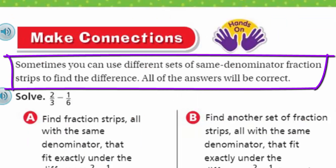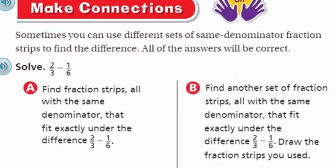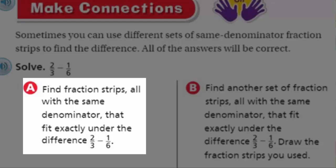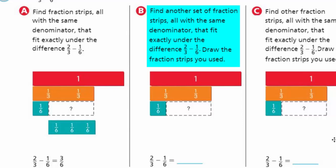Sometimes you can use different sets of same denominator fraction strips to find the difference. All of the answers will be correct. Solve, it says two-thirds minus one-sixth. Let's look at A. Find fraction strips all with the same denominator that fit exactly under the difference two-thirds minus one-sixth. They've already given us that those three one-sixths will fit right underneath there. So two-thirds minus one-sixth equals three-sixths. Now let's come to B. They're saying find another set of fraction strips, not the one-sixth, but we have to find another one.